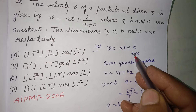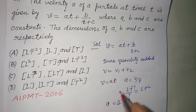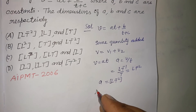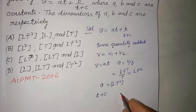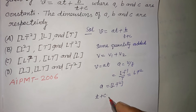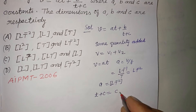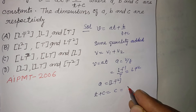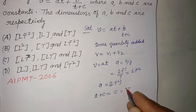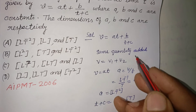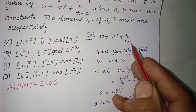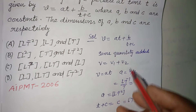Now, t plus c must have the dimension of time, so c is equal to T, because time can only be added to time.